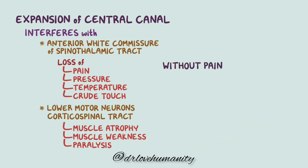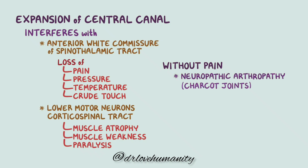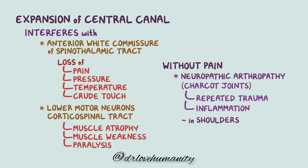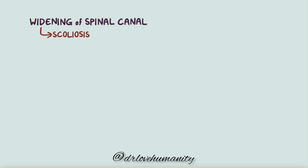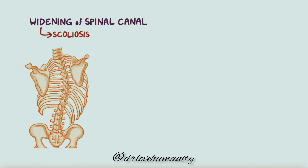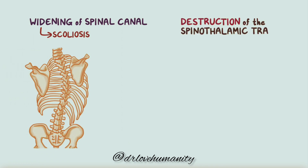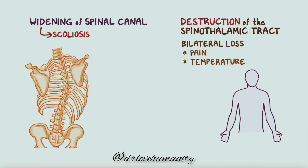Although it sounds nice to not feel pain, this can lead to several problems. One of these is neuropathic arthropathy, or Charcot joints, which is when there's repeated trauma and inflammation in a joint since there's no pain response. In syringomyelia, this is particularly seen in the shoulders. The widening spinal canal can also lead to changes in the spine like scoliosis, which is a sideways curvature of the spine. Classically, the destruction of the spinothalamic tract leads to the bilateral loss of pain and temperature in the upper extremities and back, described as a cape-like distribution, due to damage at the level of the cervical spine, usually C4 to C6.